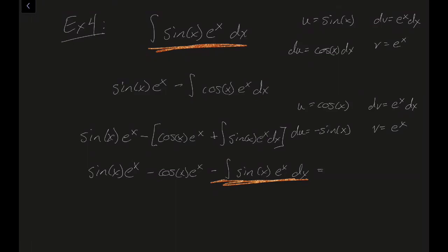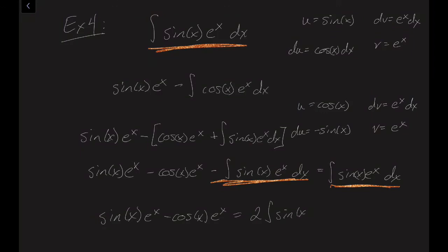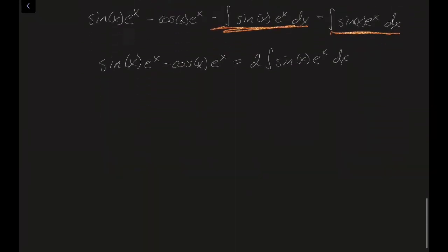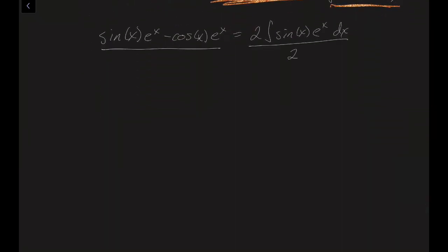Since all our steps are equalities, let's bring it down and add the integral of sin(x) eˣ dx to both sides. We get sin(x) eˣ minus cos(x) eˣ equals 2 times the integral of sin(x) eˣ dx. Dividing both sides by 2, the integral of sin(x) eˣ dx equals sin(x) eˣ minus cos(x) eˣ, all over 2, plus C. Thank you for watching, I hope this helps.